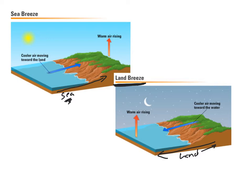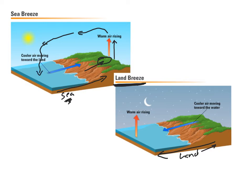Now let's take a look at how this works, starting with a sea breeze. What's going to happen is we will have heating of land, which gets hotter faster. As the land heats up, it warms the air above it, and we get warm air rising. As that warm air rises, it creates a bit of a vacuum effect, which pulls air in to fill that space. As the air rises, it gets up high and starts to spread out, and as it cools and becomes more dense, it falls back down toward the ocean where it's cooler.